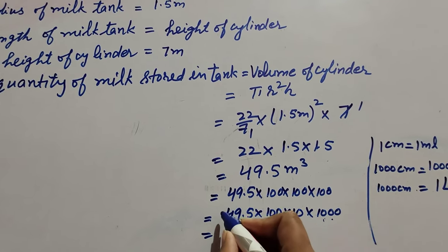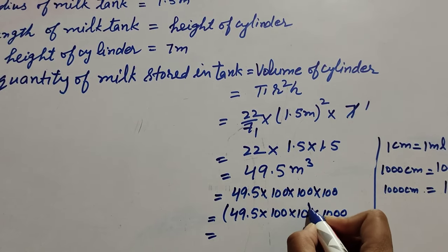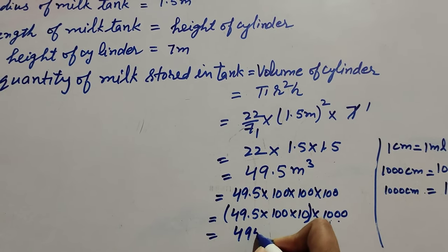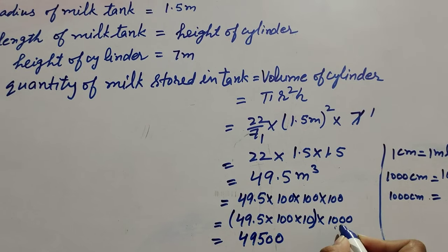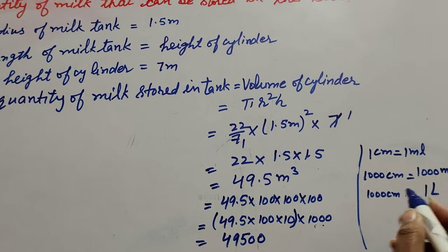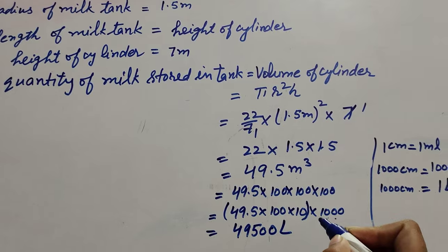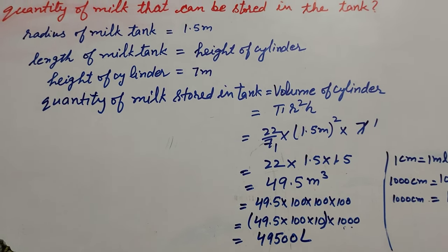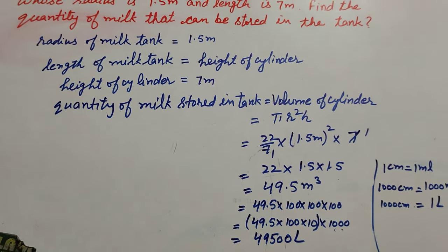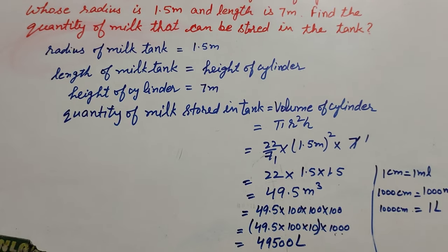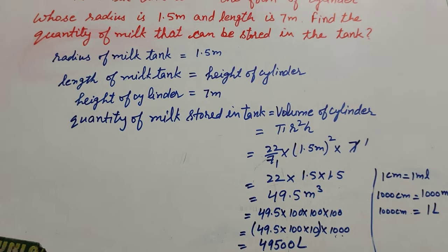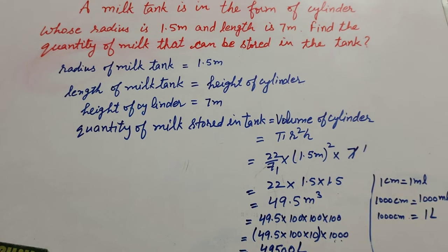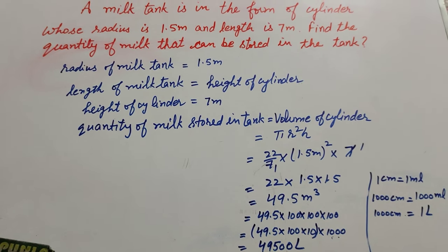We multiply and get 49,500 multiplied by 1000, and since 1000 cm³ equals 1 liter, the answer is 49,500 liters. Therefore, the quantity of milk that can be stored in the given cylindrical tank is equal to 49,500 liters.